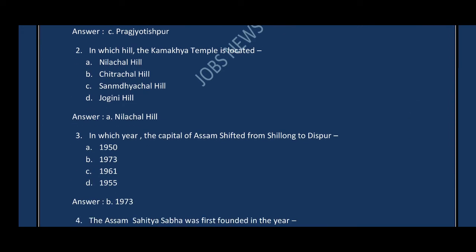Question number three: In which year was the capital of Assam shifted from Shillong to Dispur? The correct answer is option B — 1973.